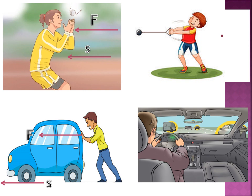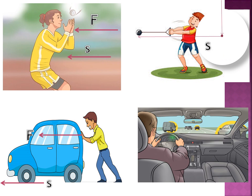In the third example, the stone is moving in a circular direction, so the displacement and the applied force are perpendicular to each other. When the force and displacement are perpendicular to each other, it is called zero work done.